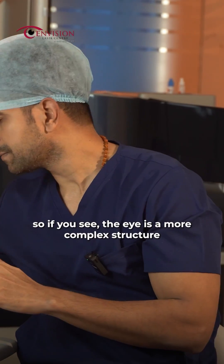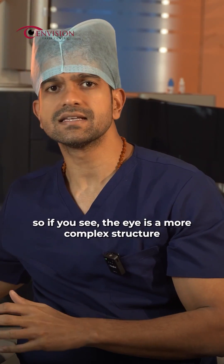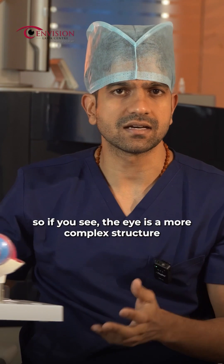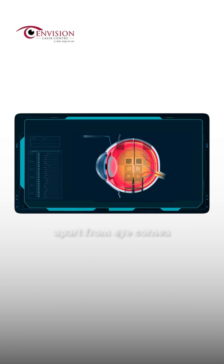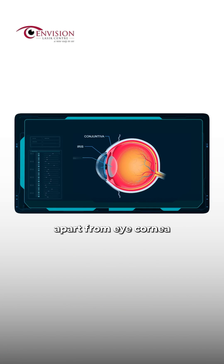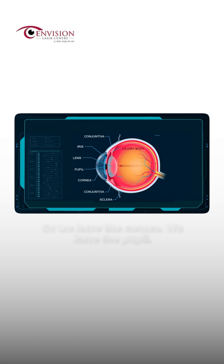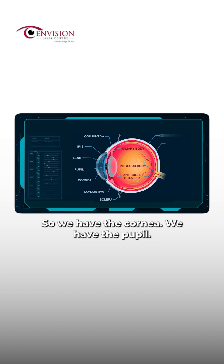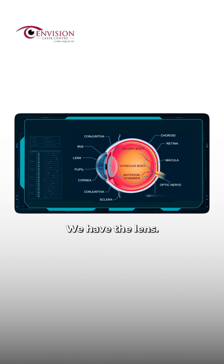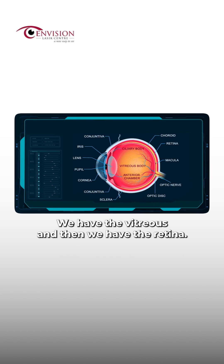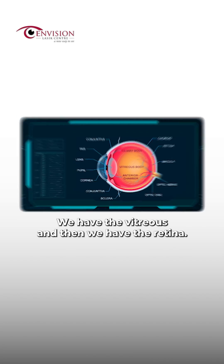If you see, the eye is a more complex structure. We have other structures in the eye — we have the cornea, we have the pupil, we have the lens, we have the vitreous, and then we have the retina.